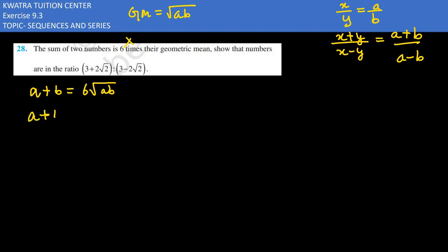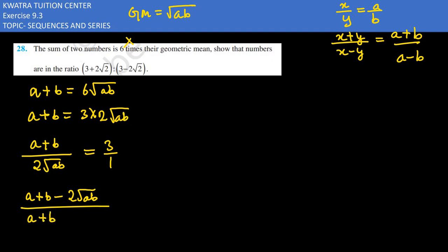Now we have to use this. First we have to break down a+b as 3·2√(ab). So (a+b)/(a-b) = (3·2√(ab))/(2√(ab)). We have to use this componendo and dividendo. Applying componendo and dividendo, (a+b+2√(ab))/(a+b-2√(ab)).